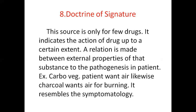Next is the doctrine of signature. This source applies to only a few drugs. It indicates the action of a drug to a certain extent — a relation is made between the external properties of a substance and the pathogenesis in the patient. For example, a Carbo vegetabilis patient wants air, likewise charcoal wants air for burning. The external properties of the substance resemble the symptomatology of the patient.